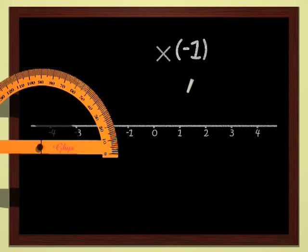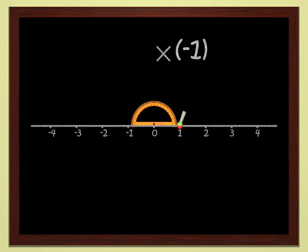Multiplying by minus one is very easy. Each point is sent to the symmetrical point with respect to the origin. In other words, we do a half turn, a rotation by 180 degrees, if you like.